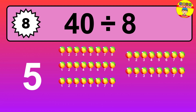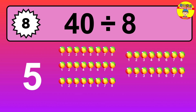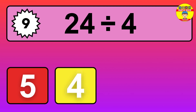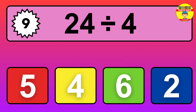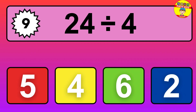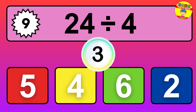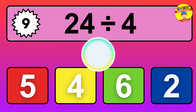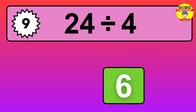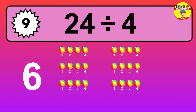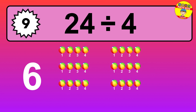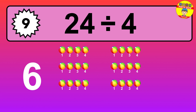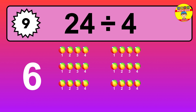so dividing 40 by 8 results in 5 equal groups. Thus, the result is: 40 divided by 8 equals 5. 24 divided by 4 is... time to think. Let's go to the solution. Divide the number 24 by 4. Each group contains 4 units, so dividing 24 by 4 results in 6 equal groups. Thus,